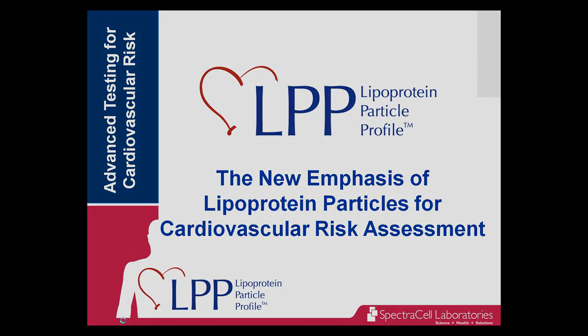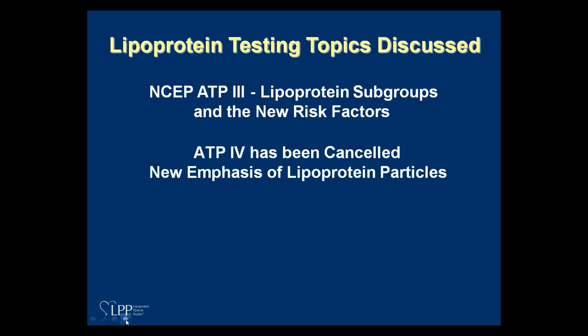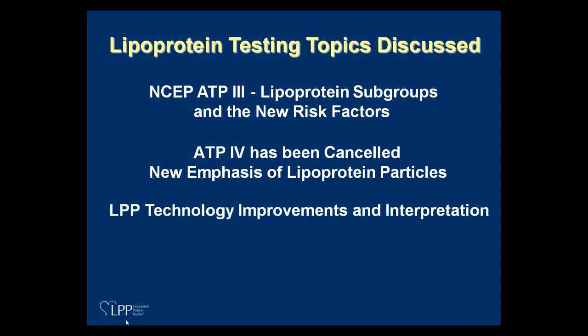The topics I want to cover today are the ATP-3 guidelines and the NCEP-ATP-3 — those are the current guidelines we're using. They talk about new subgroups and new risk factors. We'll also discuss the fact that there doesn't appear to be an ATP-4 announcement coming anytime soon and what the consequences are. I also want to spend time on the major improvements we've made in the LPP process in the last year, most finished by around April 1st, which should dramatically change how you treat your patient and how we assess risk.